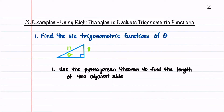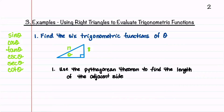We're now going to do some example problems where we'll use right triangles to evaluate trigonometric functions. The first problem, we are given a triangle where we're given angle theta, the opposite side, and the hypotenuse, and we're asked to find all six trigonometric functions. The first step is to use the Pythagorean theorem to find the length of the adjacent side, because that's the side length we're not given.